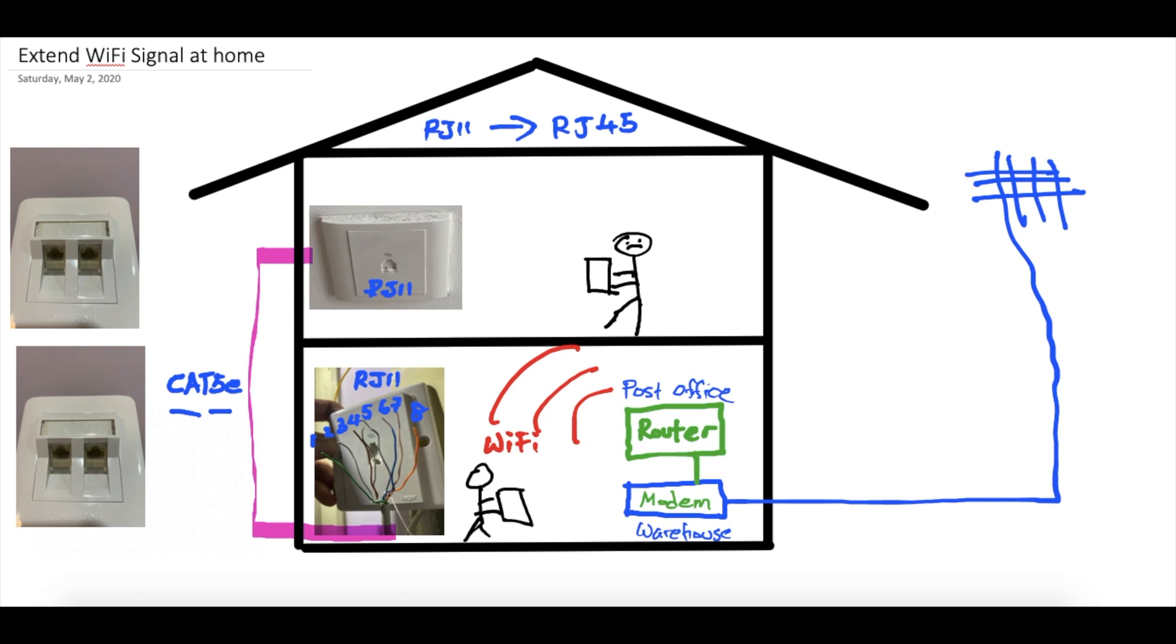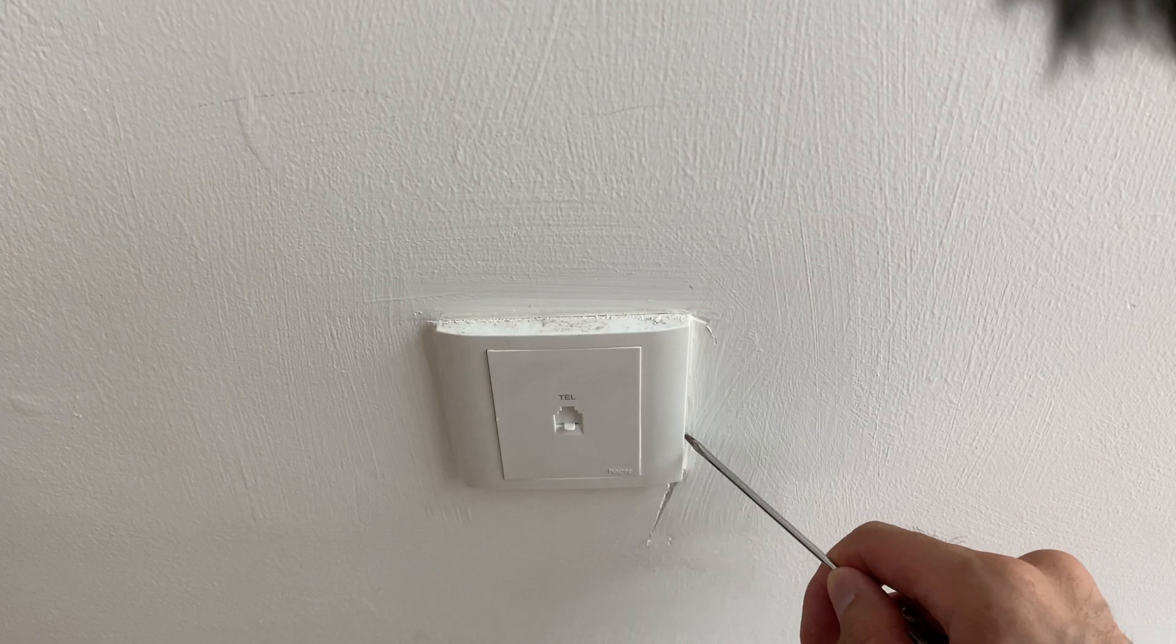If I were downstairs, I'm happily receiving my parcel, which is my WiFi signal. When I'm here on the first floor, sadly I can't receive my WiFi signal because the WiFi signal will either be bounced off or absorbed by the building material, so you can hardly reach it. So what I'm going to do here in this video is set up another post office up here.